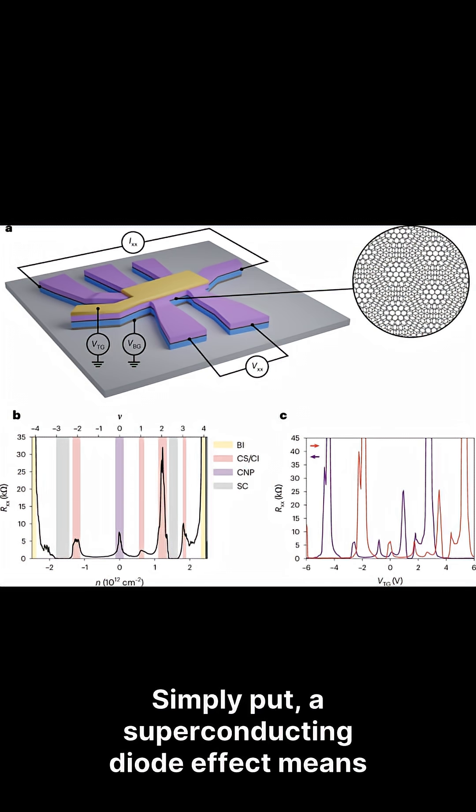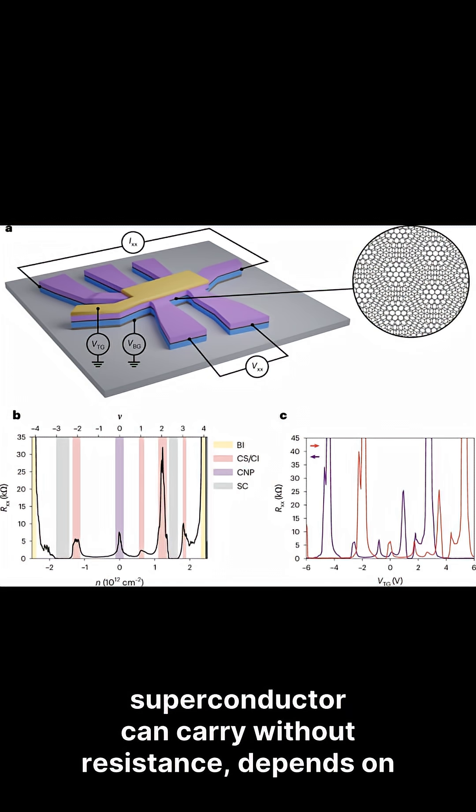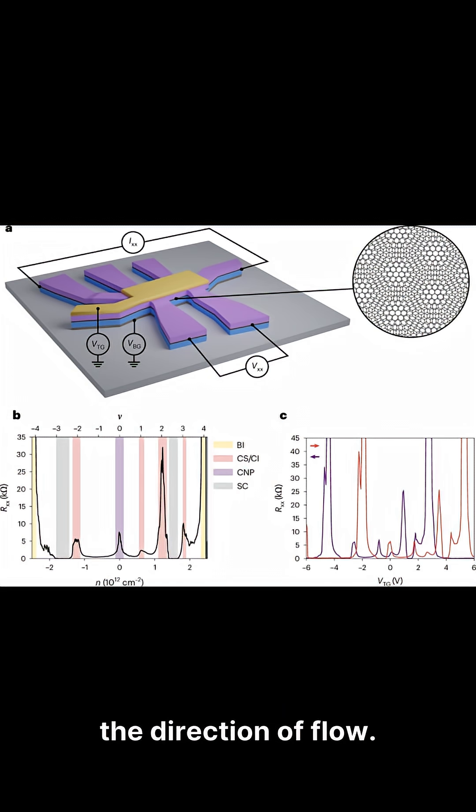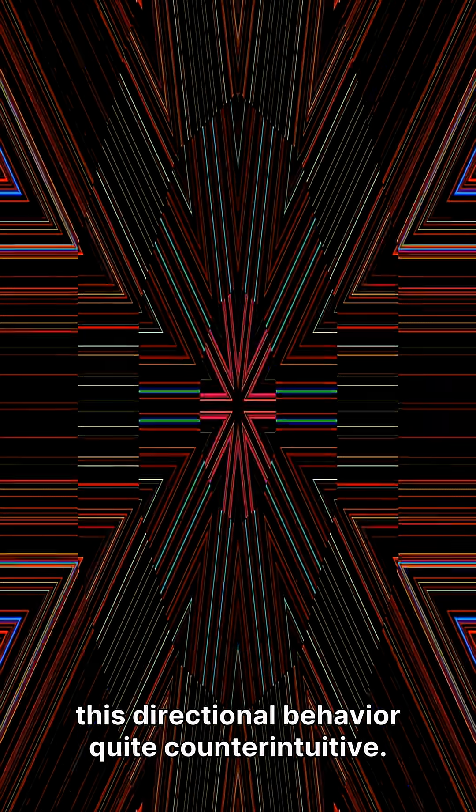Simply put, a superconducting diode effect means the critical current—the maximum current a superconductor can carry without resistance—depends on the direction of flow. In superconductors, resistance is already zero, making this directional behavior quite counterintuitive.